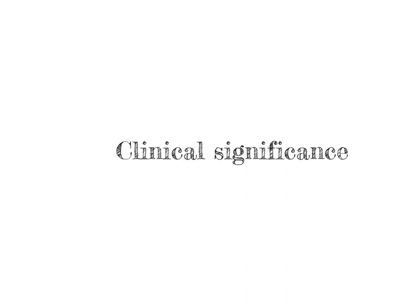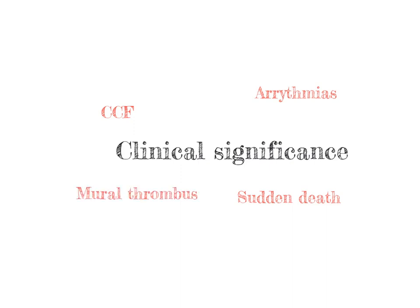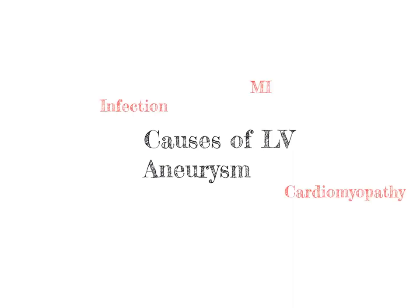What is the significance of LV aneurysm? It increases the risk of ventricular arrhythmias and sudden cardiac death, and increases the risk of congestive cardiac failure. It may also cause mural thrombus and subsequent embolization. LV aneurysm is caused by acute MI, cardiomyopathy, cardiac infection, and congenital abnormalities.